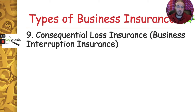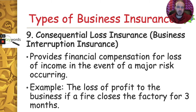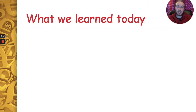Number nine is consequential loss insurance, also known as business interruption insurance. This gives compensation to a business if they lose income because of a major risk occurring — for example, if the business loses profit because there was a big fire in the factory and they had to close it for three months.